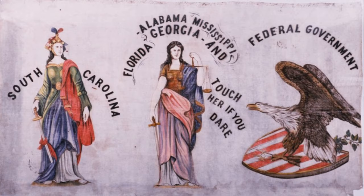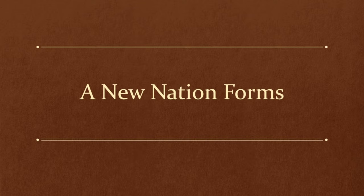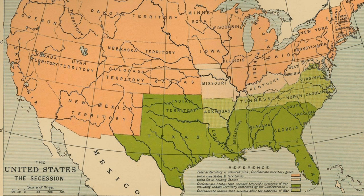A few weeks later, South Carolina became the first of the Southern states to declare its separation from the Union. January and February 1861 saw the exit from the Union of six more Southern states: Mississippi, Florida, Alabama, Georgia, Louisiana, and Texas. North Carolina, where loyalties were divided, continued to take a wait-and-see approach.